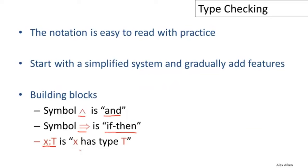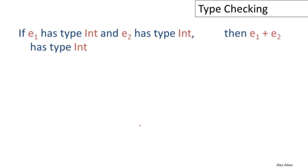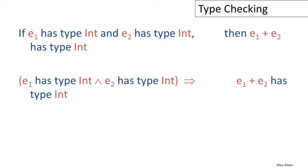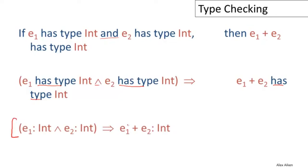We use logical conjunction (∧) for 'and' and implication (→) for 'if-then'. The string 'X : T' is read as 'X has type T'. So the rule 'if E1 has type Int and E2 has type Int, then E1 + E2 has type Int' becomes: (E1 : Int ∧ E2 : Int) → (E1 + E2 : Int). The traditional notation writes hypotheses above a horizontal line and the conclusion below.